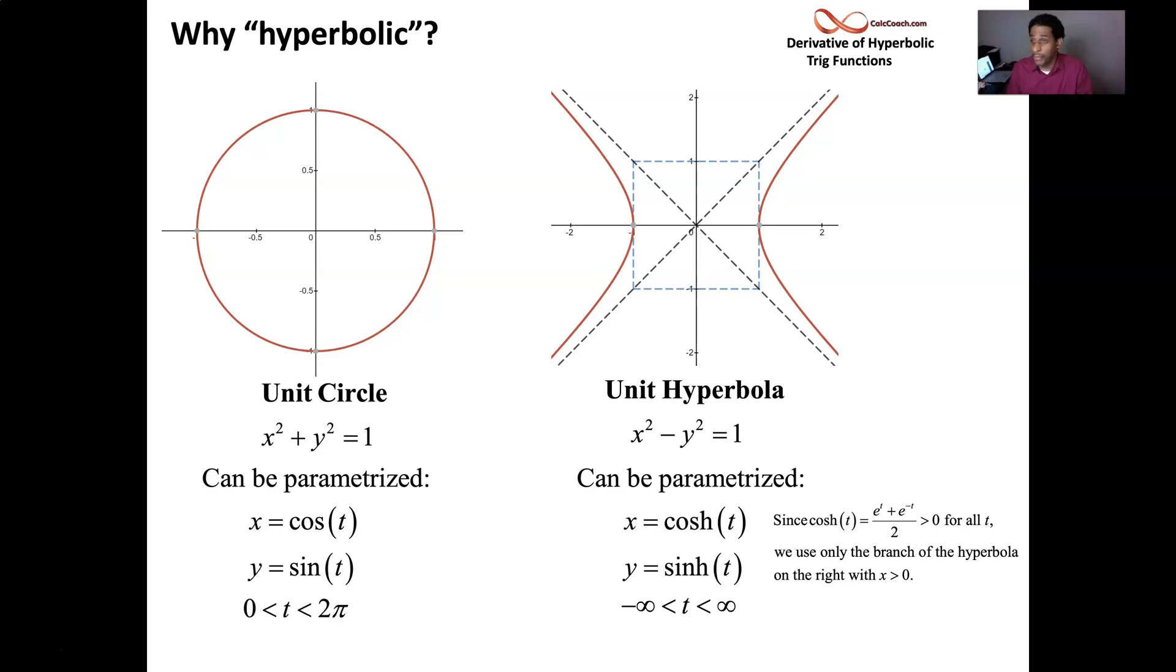So X squared plus Y squared. And remember the equation, right? X squared minus Y squared. The hyperbolic cosine squared minus the hyperbolic sine squared is equal to 1. While the sine squared plus the cosine squared is equal to 1 or another way around.